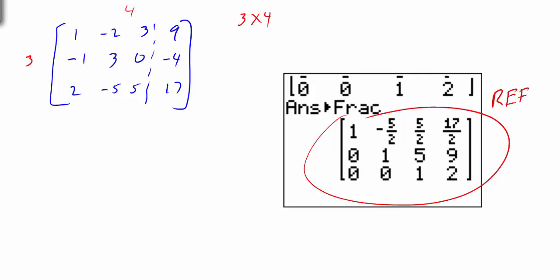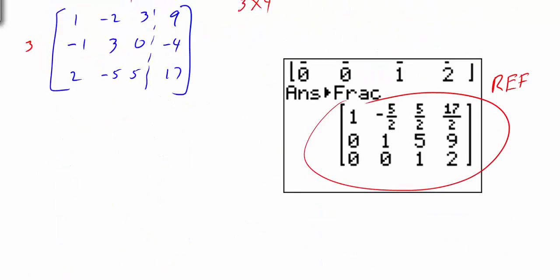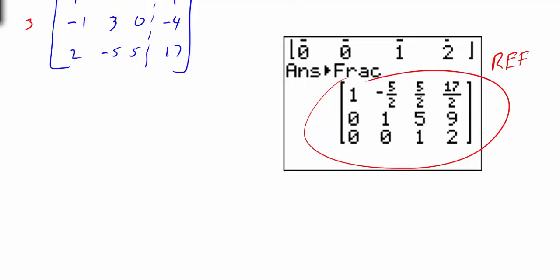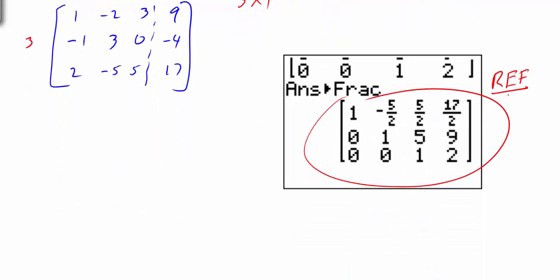This is our row echelon form. Notice it's similar to what we had in our example, but the calculator's version has fractions. Our manual result had 1, negative 2, 3, 9 / 0, 1, 3, 5 / 0, 0, 1, 2, whereas the calculator gives 1, negative 5/2, 5/2, 17/2 / 0, 1, 5, 9 / 0, 0, 1, 2. The last row is the same because z equals 2 either way. Row echelon form is not unique — different techniques give different-looking results, but both are correct and yield the same final values: x equals 1, y equals negative 1, z equals 2.